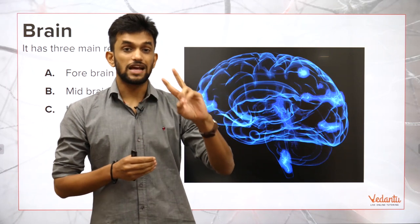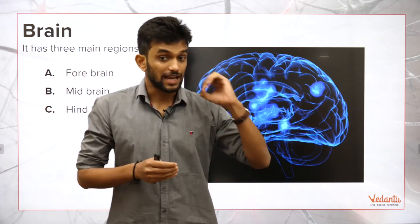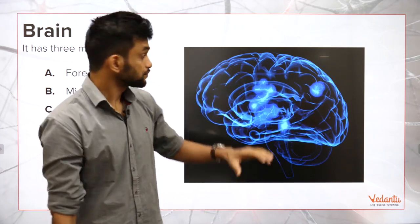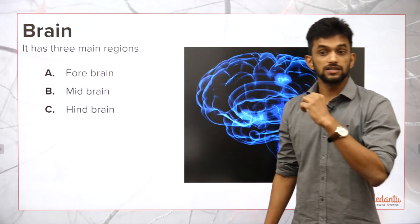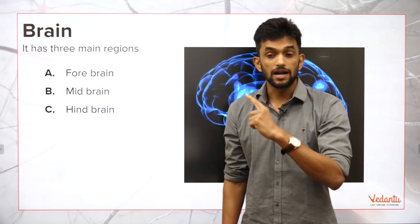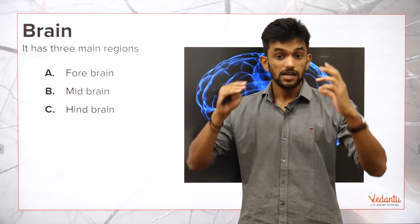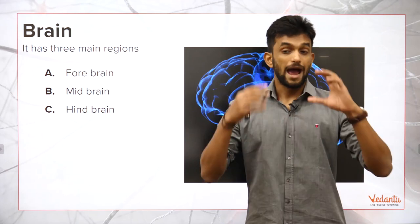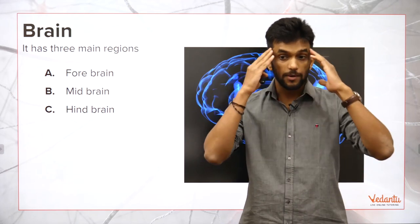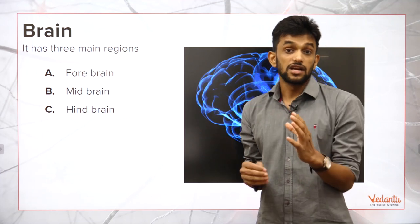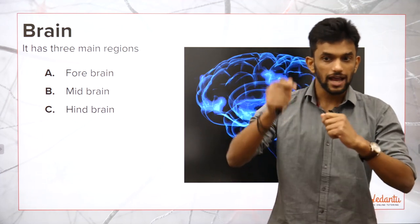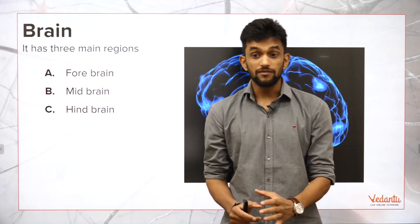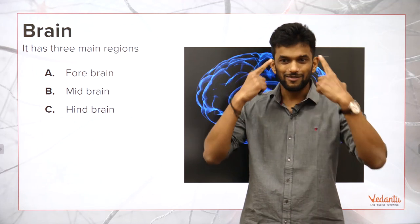So it's actually the third session on the chapter Control and Coordination. We are going to begin with the brain. In the first session we spoke about plant coordination; in the second session we began the discussion on the nervous system — how the body controls and coordinates. We studied neurons and how they help in conduction of impulses. Today we are going to study about the brain.